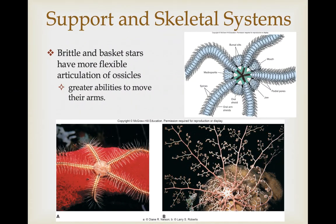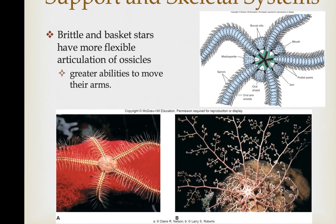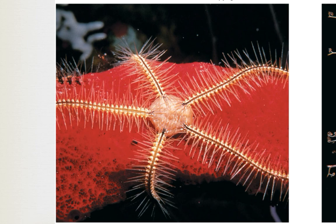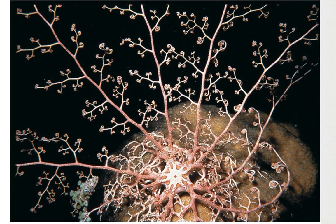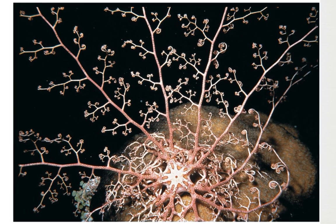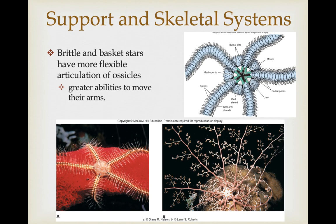Brittle stars and basket stars have more flexible articulation of their ossicles, giving them greater ability to move their arms. Brittle stars are named because one of their defense mechanisms is they can jettison or disarticulate an arm if a predator grabs it as they try to escape. So if you're ever in a tide pool and pick one up, you have to do so very gently so it doesn't lose its arms.